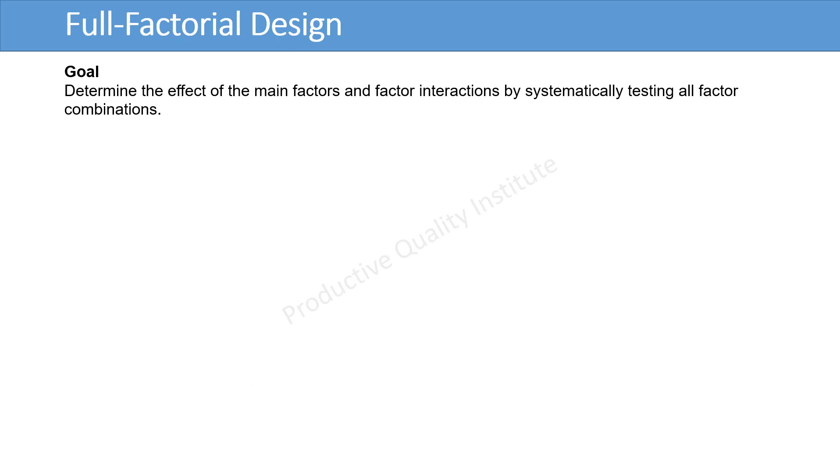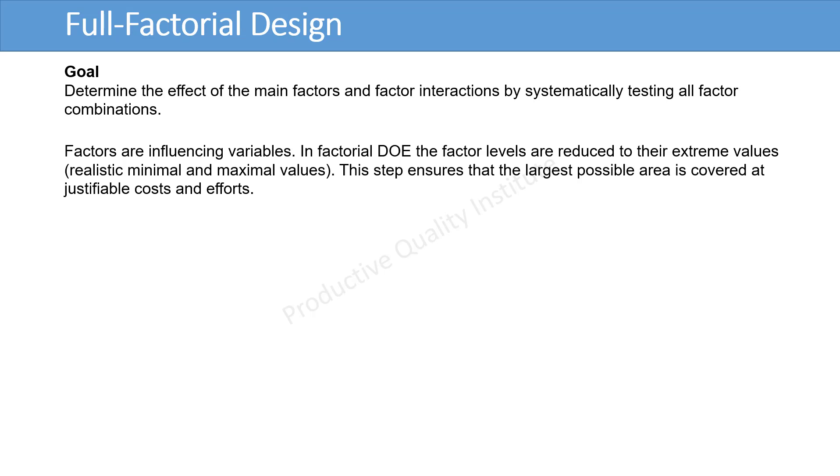The goal is to determine the effect of the main factors and factor interactions by systematically testing all factor combinations. Factors are influencing variables. In factorial DOE, the factor levels are reduced to their extreme values, realistic minimal and maximal value. This step ensures that the largest possible area is covered at justifiable cost and efforts.